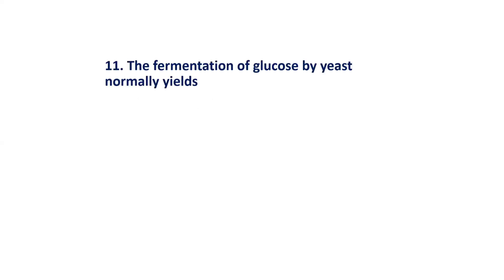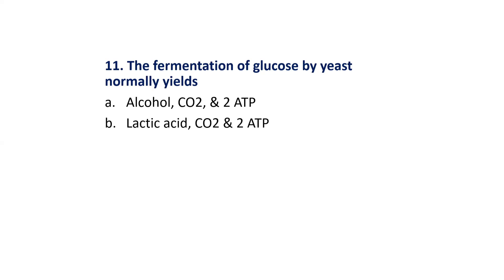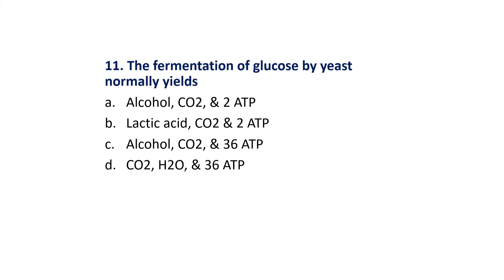MCQ 11: The fermentation of glucose by yeast normally yields — Options are: Alcohol, carbon dioxide, and 2 ATP molecules; Lactic acid, carbon dioxide, and 2 ATP molecules; Alcohol, carbon dioxide, and 30 ATP molecules; Carbon dioxide, water, and 36 ATP molecules. The correct answer is Option A: Alcohol, carbon dioxide, and 2 ATP molecules.